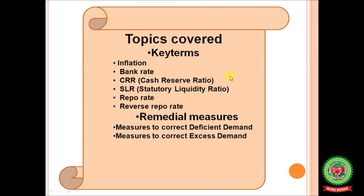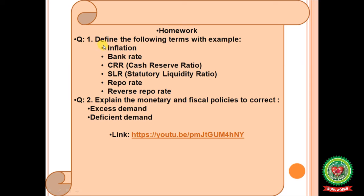Hope you have understood the topic. Today we covered key terms — inflation, bank rate, cash reserve ratio, statutory liquidity ratio, repo rate, reverse repo rate — and remedial measures to correct both deficient demand and excess demand. Homework: Question 1 — define the following terms with examples: inflation, bank rate, CRR, SLR, repo rate, reverse repo rate. Question 2 — explain the monetary and fiscal policies to correct excess demand and deficient demand. Please complete your notes in your fair copy for better learning, and go through the links on YouTube for better understanding. Thank you for listening.